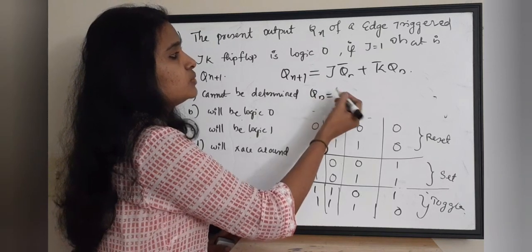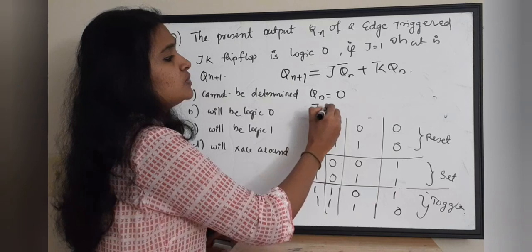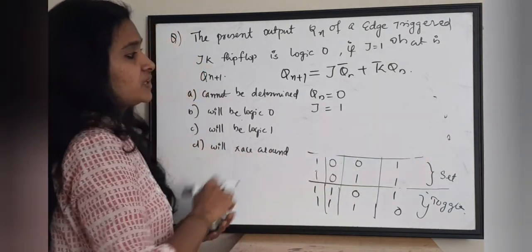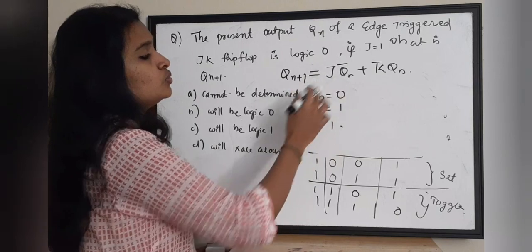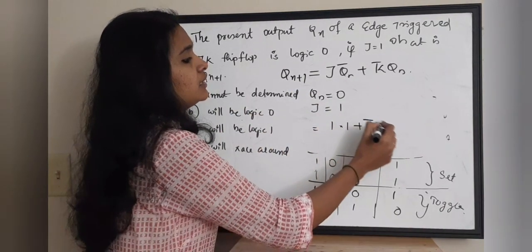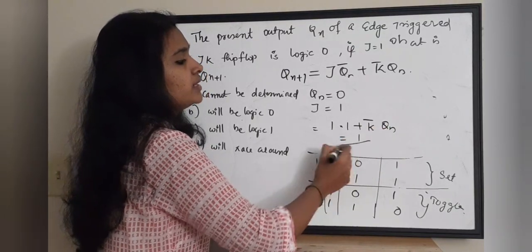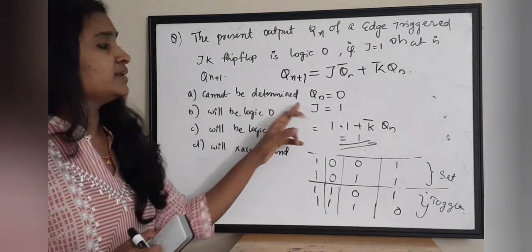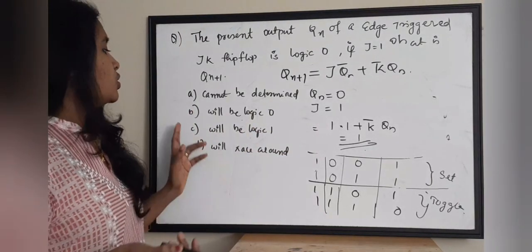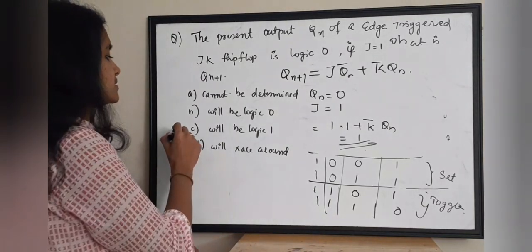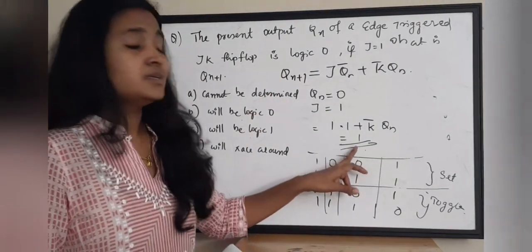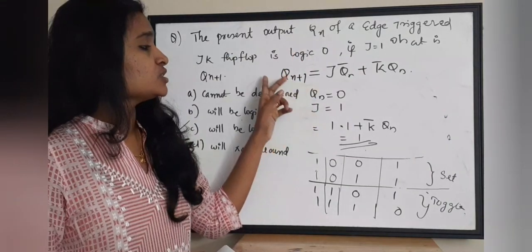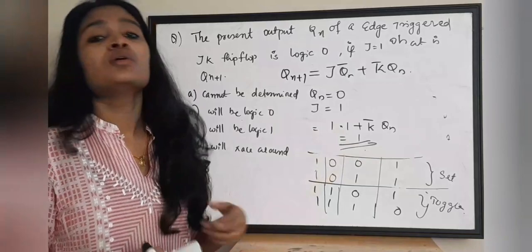In the question, QN equals 0 and J equals 1. Applying these values to the equation: J·QN-bar = 1 × (0-bar) = 1 × 1 = 1, and 1 plus any term equals 1. So QN+1 equals 1. Option A: cannot be determined — no. Option B: logic 0 — no. Option C: logic 1 — yes, correct. So if QN is 0 and J is 1, the next state QN+1 is logic 1. The correct answer is option C.